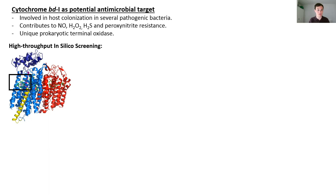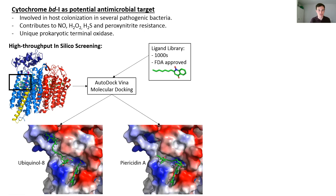I'm looking at screening potential inhibitors of cytochrome BD1s and there are several different targets for these inhibitors. One could be the quinol binding site, which I'm focusing on first. Also there are the oxygen entry routes and potentially the regions between the different subunits. To do this screening I'm using molecular docking software called AutoDock Vina, which allows me to dock thousands of ligands from ligand libraries at a time into the quinol binding site, and I started with FDA approved drugs, and this leads to figures such as these being produced.